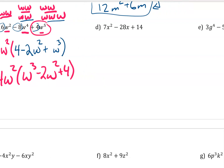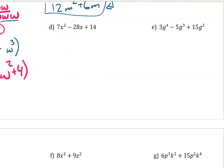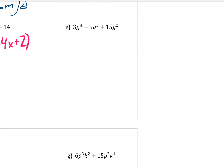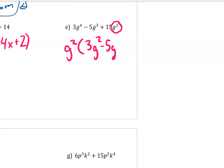Pause the video and try D and E on your own. For D, we can factor out a 7 to get 7 times (x squared minus 4x plus 2). For letter E, we can factor out g squared, giving g squared times (3g squared minus 5g plus 15).